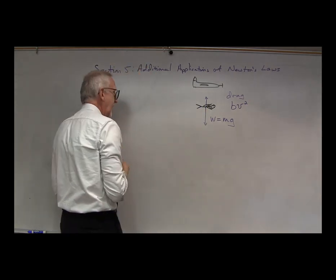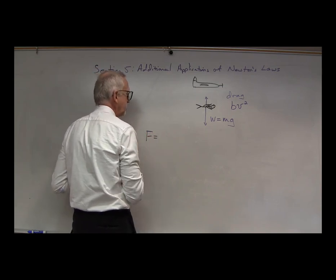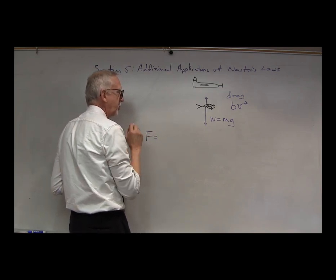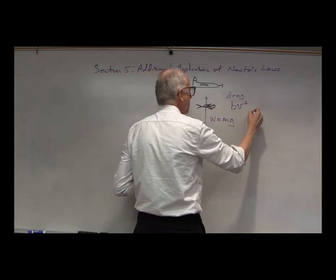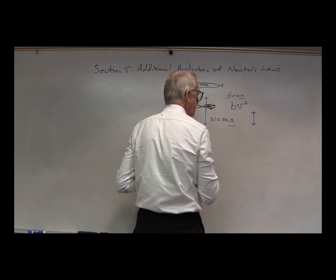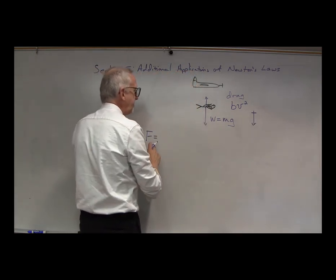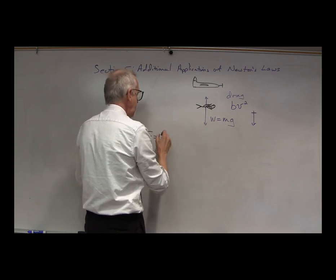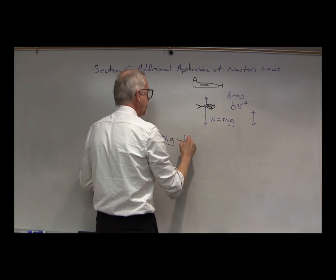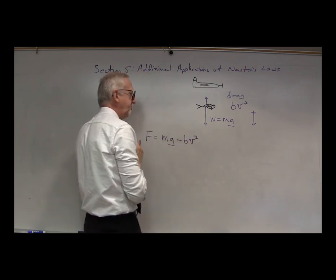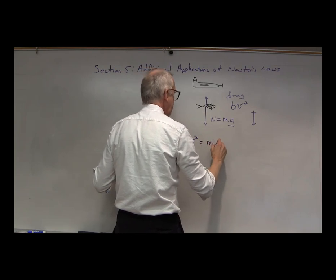We know that F equals ma. What's the total force? We'll say that because the motion is downward, downward is positive. So the net force in the vertical direction is mg, and then the drag gives us minus bv squared. And we know that this must equal the mass times acceleration.